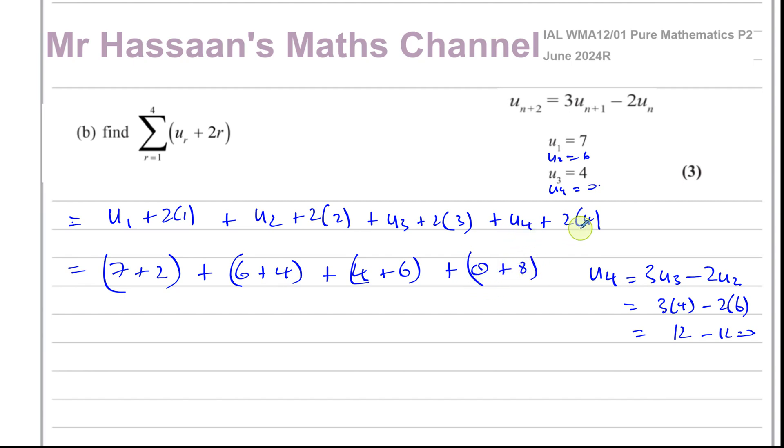u₄ plus 8. So now we can work out this is 9 plus 10 plus another 10 plus 8. That's going to be 29 plus 8, which is 37. So there's the answer to part B.